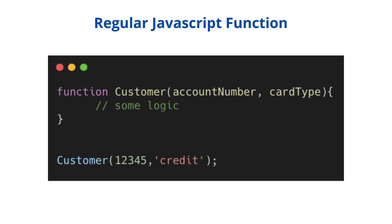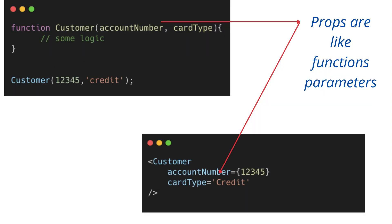Let's first understand the difference between state and props. At the end, all components are basically JavaScript functions. For example, in regular JavaScript, if we create a customer function which takes certain parameters like account number and car type, we pass this data from outside to the function. The same thing in React — customer is a component, and account number and car type are the props. So props are like function parameters — they pass information from a parent component to a child component.